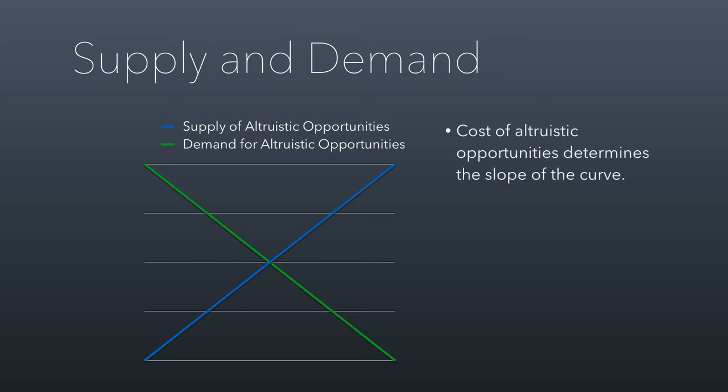So the first point is that the cost of altruistic opportunities determines the slope of the curve. The more expensive they are over time, the more of them will be out of reach of donors because donors want cheaper altruistic opportunities. This also means that in every market there's always unmet demand — basically, there are people who would be generous if the price of the good being done were a little bit cheaper.